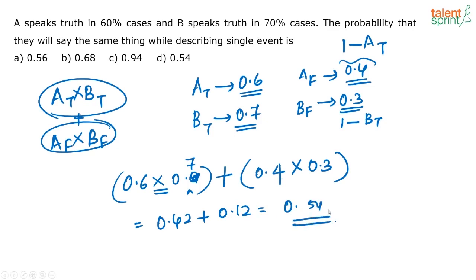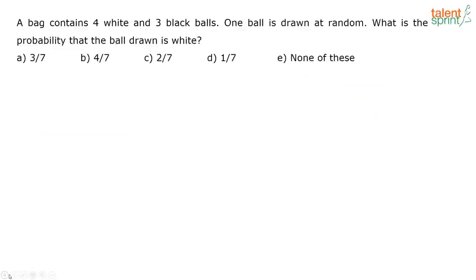The correct answer is option D. Next question: A bag contains 4 white and 3 black balls. One ball is drawn at random. What is the probability that the ball drawn is white? Very easy question, this is on probability. There are totally 7 balls. I am drawing 1 ball at random. What is the probability that the ball is white?